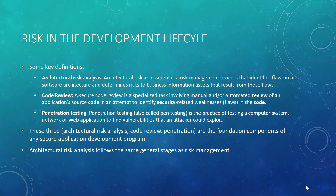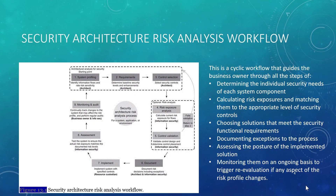We're going to follow the same general stages found in risk management. We start with system profiling — figuring out what assets we have, looking at the information flows across those assets, determining baseline security levels and enhancements, the requirements and the scope. From there, we look at and select security controls. The next two steps are optional: sometimes you'll do a risk exposure analysis and a control validation to make sure controls are working as intended.